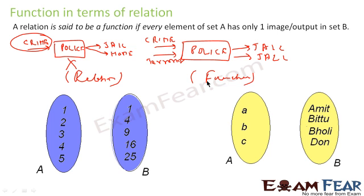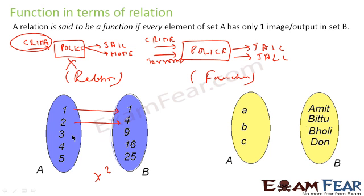For a given input we have only one output — every element in set A has only one image. For example, for f(x) = x²: input 1 gives output 1, input 2 gives output 4 — wait, input 2 gives output 2 here — input 3 gives output 9, input 4 gives output 16, input 5 gives output 25. This is an example of a function.